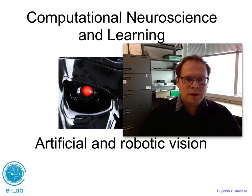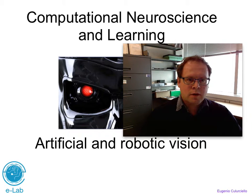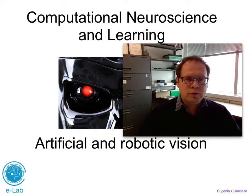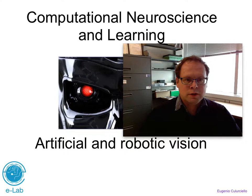Hello, everyone. My name is Eugenio Colorcello. Today we're going to talk about some of computational neuroscience and learning basic information that one might want to use when studying artificial and robotic vision systems.